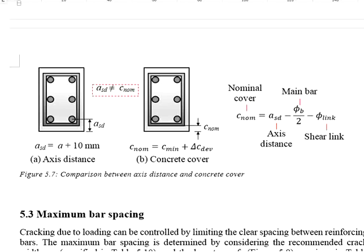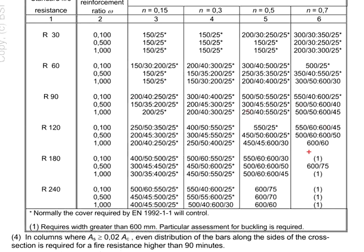And then, you see here. There is number one here. You may refer to the footnote here. It means that you will require the column width greater than 600mm. And also, you need to do an assessment for the buckling.